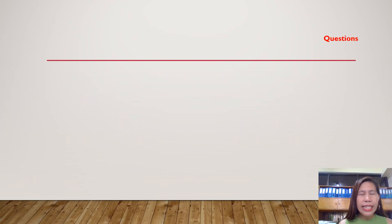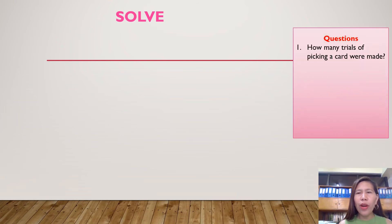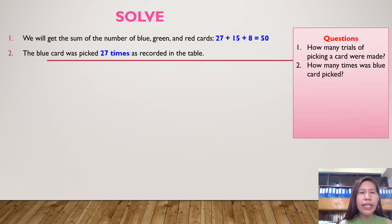After planning, then this is the next step we're going to solve. In our problem, the first question is, how many trials of picking a card were made? To get the answer of that question, we're going to just add the number of blue, green, and red cards. That is 27 plus 15 plus 8. That is equal to 50. 50 trials. For question number two, how many times was blue card picked? The blue card was picked 27 times as recorded in the table.